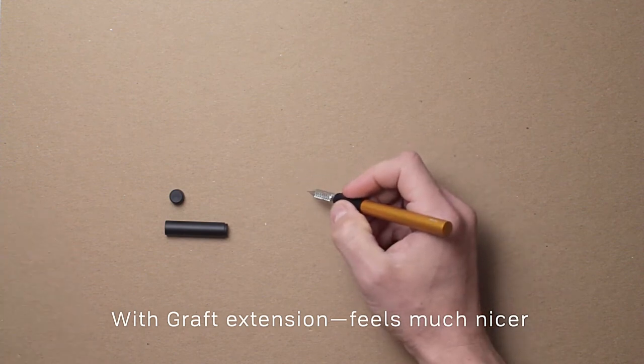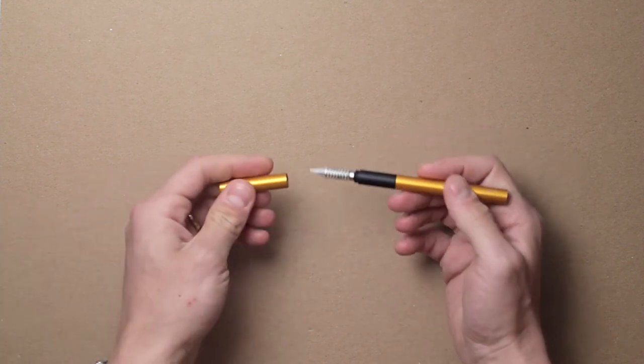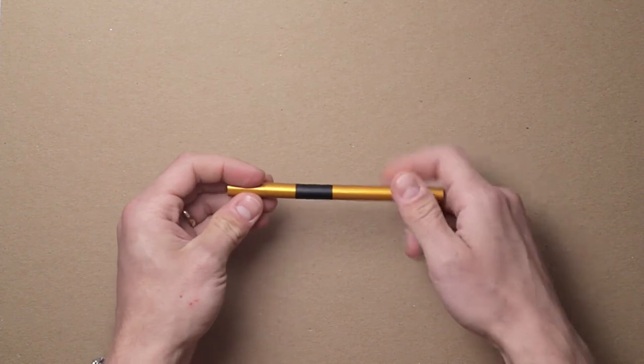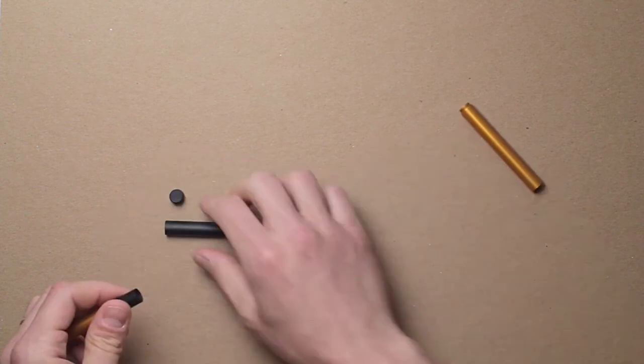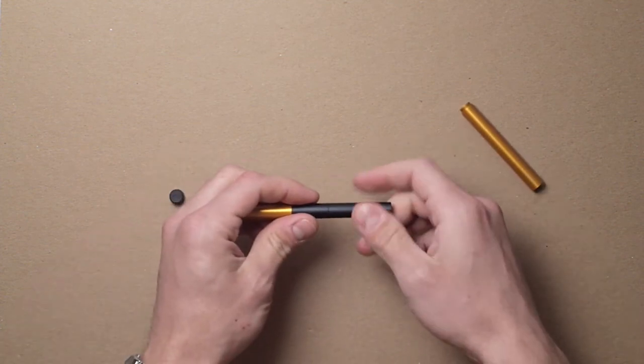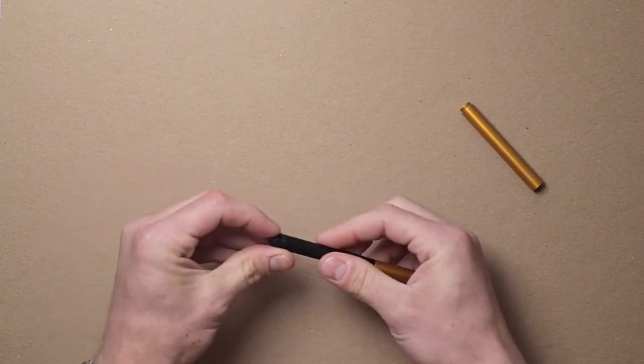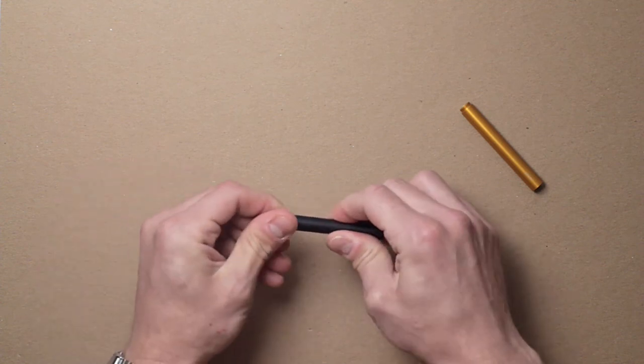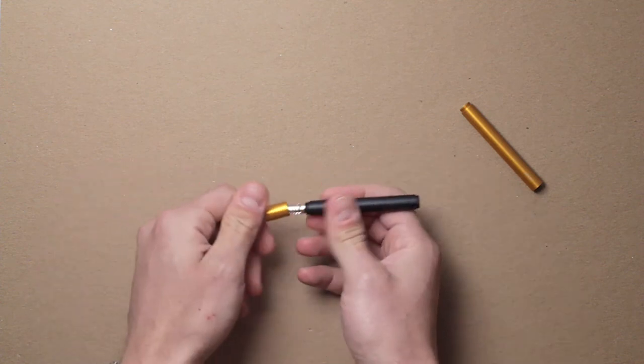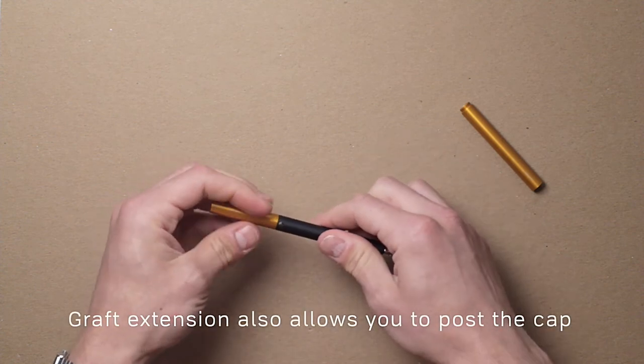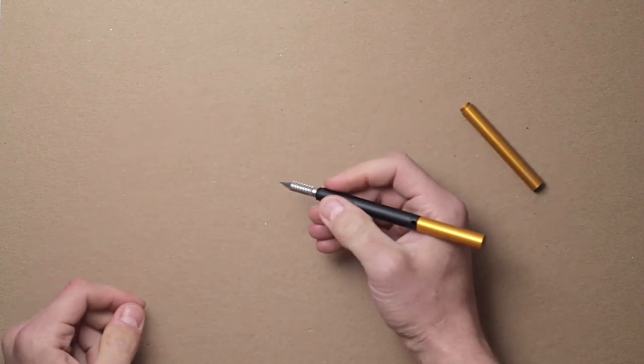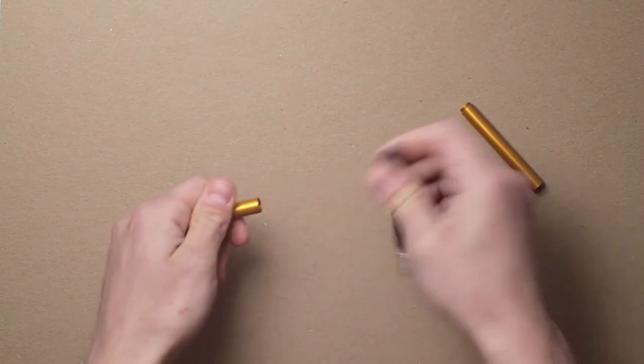The nib itself is made of solid stainless steel, and it's got some weight to it. Once the lightweight aluminum pen barrels are attached, it really does bring the pen to a comfortable weight. You can also see that with the Graft pen barrel, it gives you the ability to screw the cap onto the back. This also brings it to a nice length.